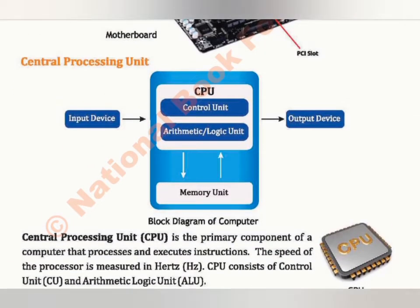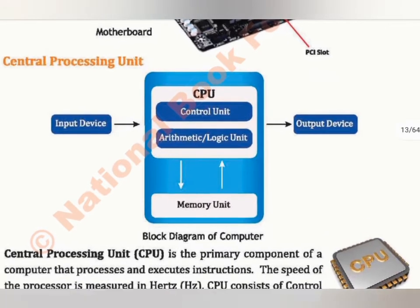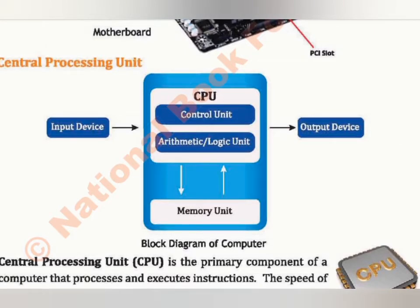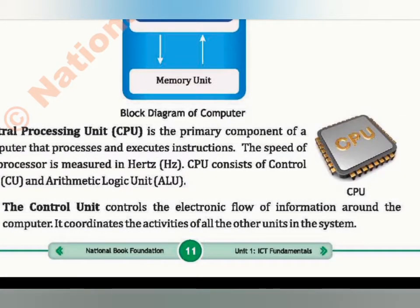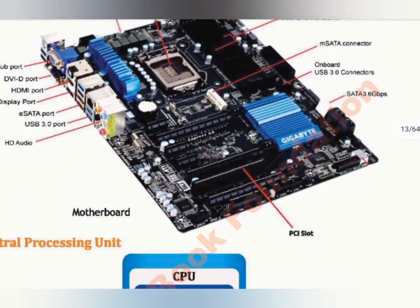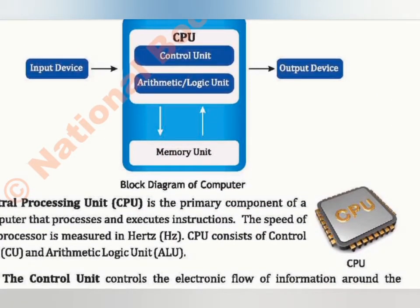This whole block diagram explains that CPU has a control unit, an arithmetic logic unit, and a memory unit. Central processing unit — this CPU is attached to the motherboard — is the primary component of the computer that processes and executes instructions. CPU does processing: input devices, data, process, and output devices. Its basic work is to take data, process and execute. The speed of the CPU is measured in hertz.